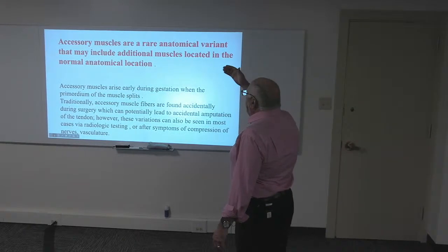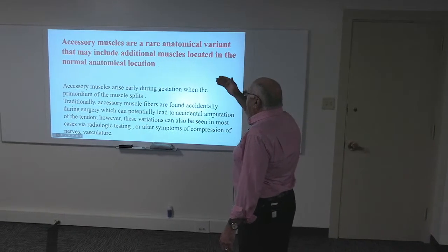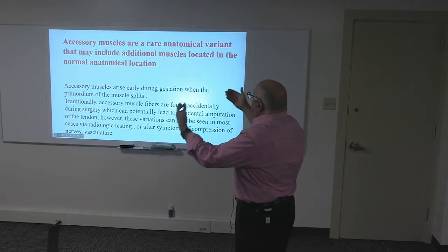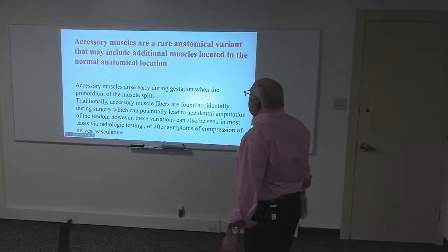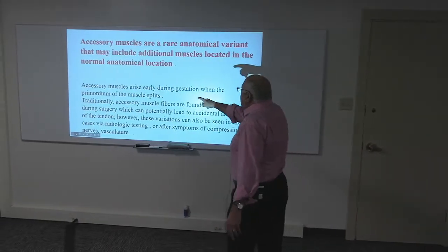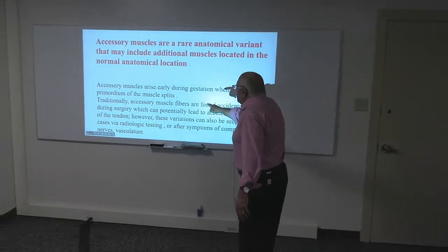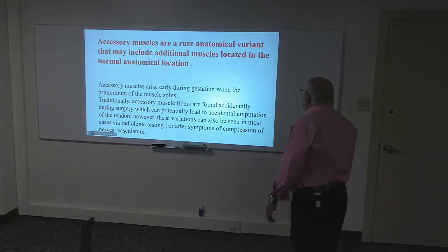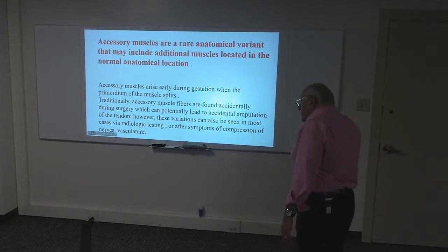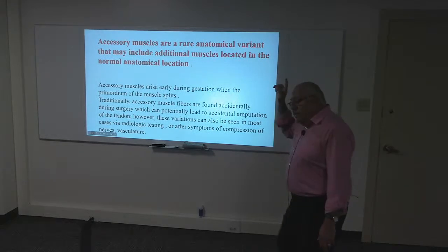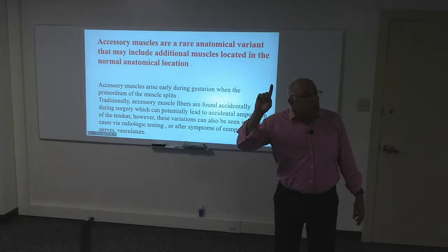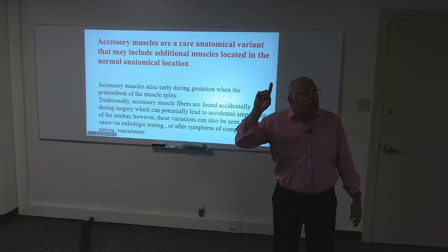Accessory muscles are rare anatomical variations. Sometimes there is an extra muscle — not missing, but extra — arising from a primordial split of the muscle. During surgery, this can potentially lead to accidental amputation of the tendon. Be careful — we need those muscles sometimes.